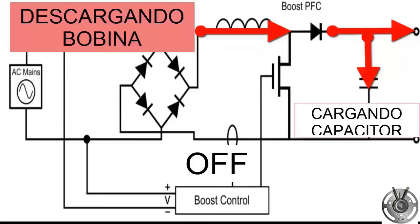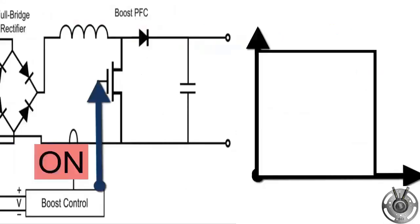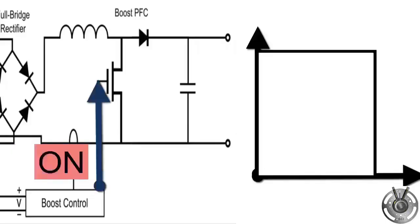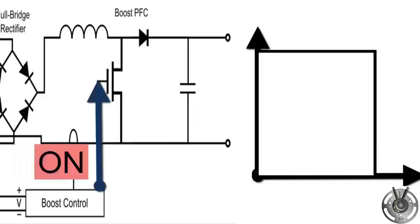At this point, we must remember that testing or diagnosing the reactor is very simple. You just need to disconnect the power supply to the reactor, and with a multimeter on the ohm scale, measure the electrical continuity of this component. If you have the equipment manual, measure its resistance and compare it to the value in the manual.